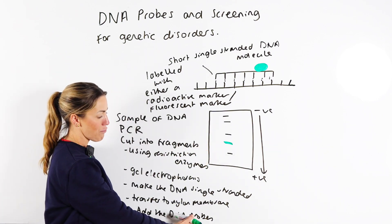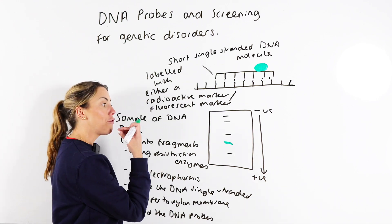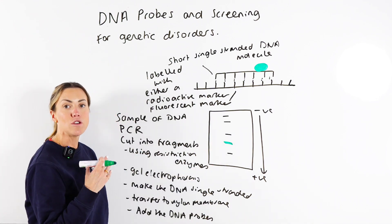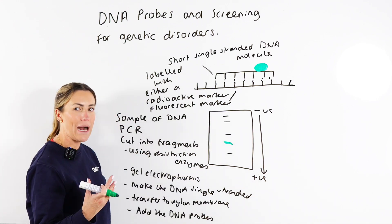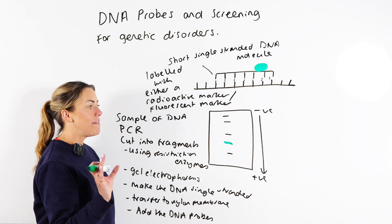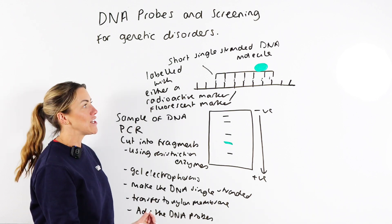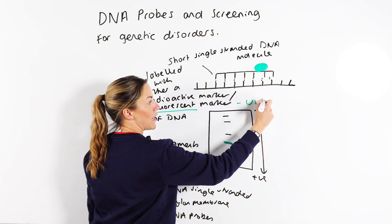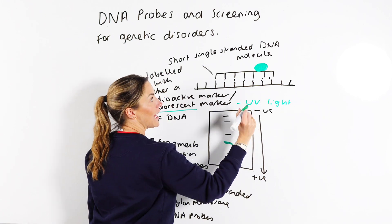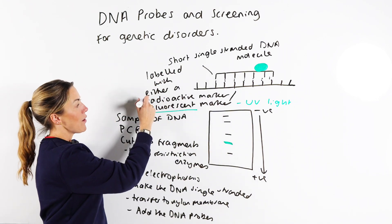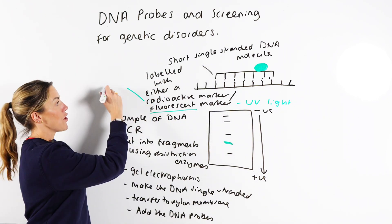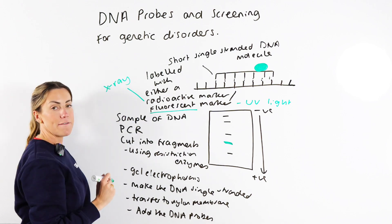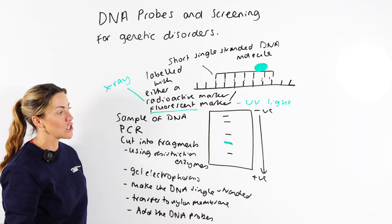So you'll add the DNA probes. You will then have to rinse the membrane to remove or wash away any unbound probes. Then you use your visualization technique. So if you've used a fluorescently labeled DNA probe, your visualization would be with UV light. If you've used a radioactive marker on your DNA probe, then you would use X-ray film or autoradiography to visualize it.